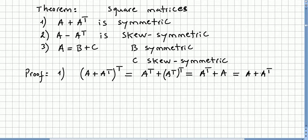And A transpose plus A is the same as A plus A transpose, right? So the transpose equals the original, which means this matrix, the sum, is symmetric. That concludes the proof.